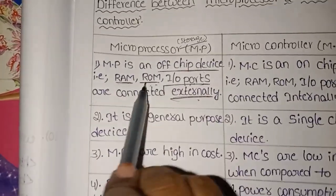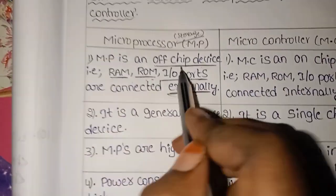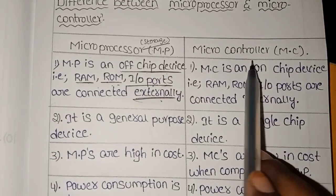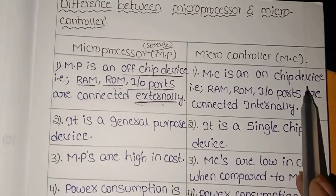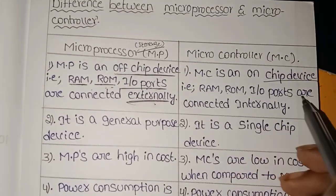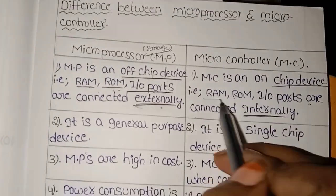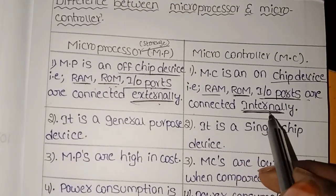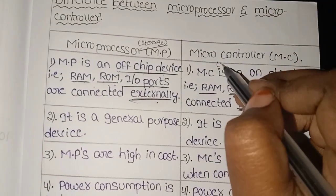For microcontroller, there is internal storage capacity. That is, RAM, ROM, and Input/Output Ports are connected internally. The storage capacity is internal.